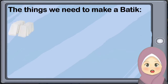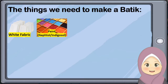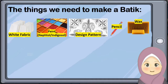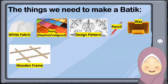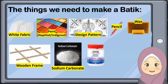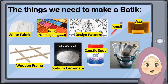To make batik, you need the following materials: white fabric, paint, a design pattern, a pencil, wax, a wooden frame, sodium carbonate, caustic soda, a chanting pan, and a stove.